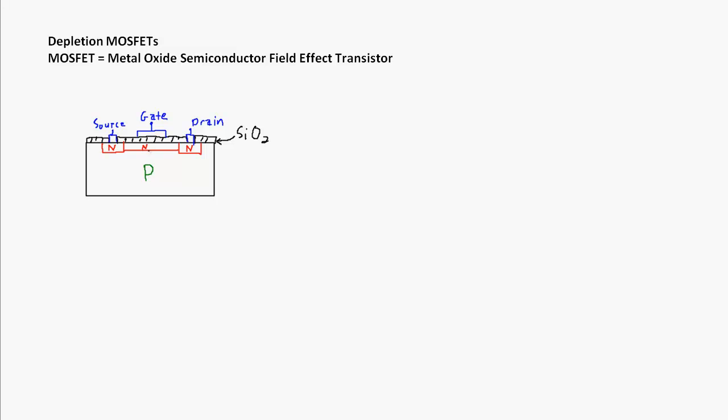Where things are different in the depletion MOSFET is if I make the voltage on the gate more positive than the source. What I'm going to do is pull extra electrons out of the P-channel into the N-channel, effectively increasing the size of this N-channel and therefore decreasing the resistance between the source and the drain.